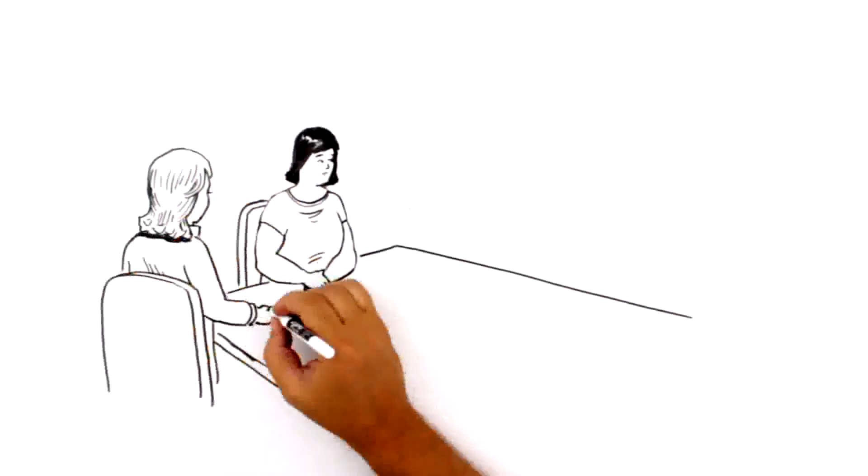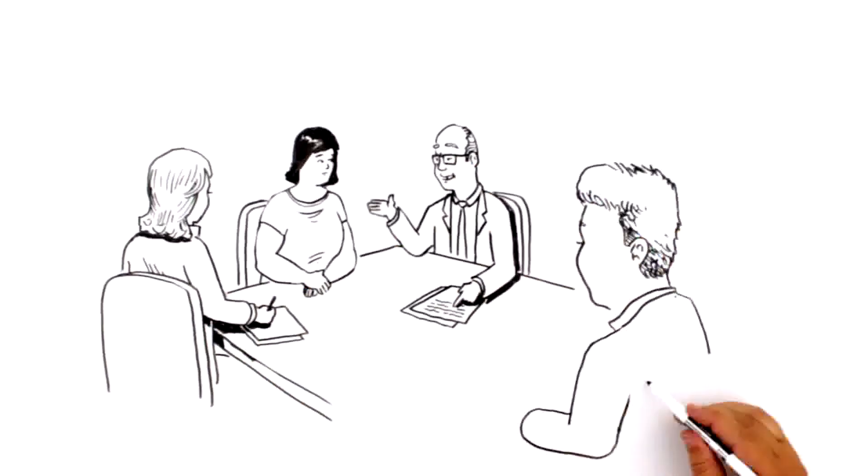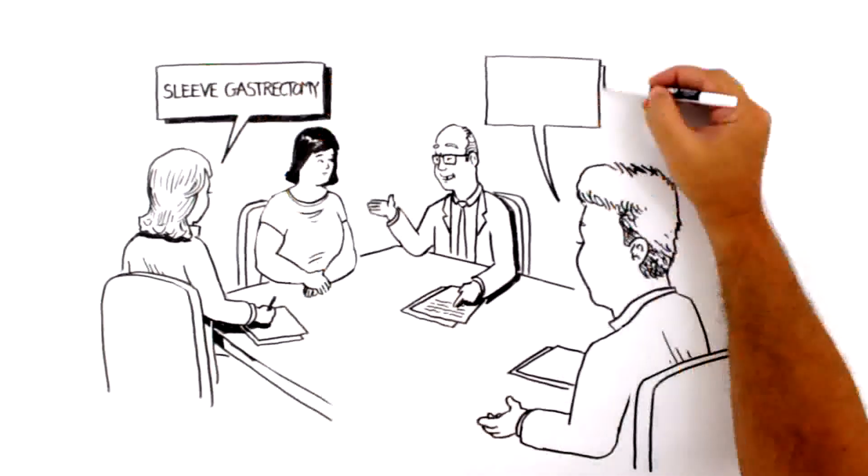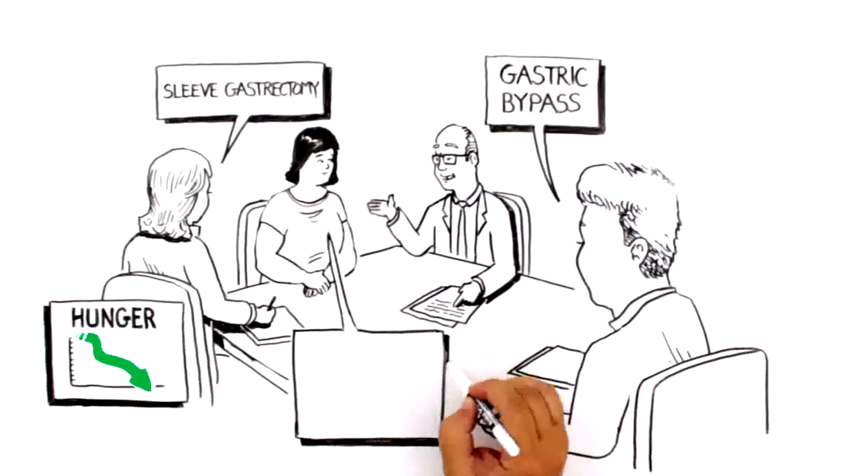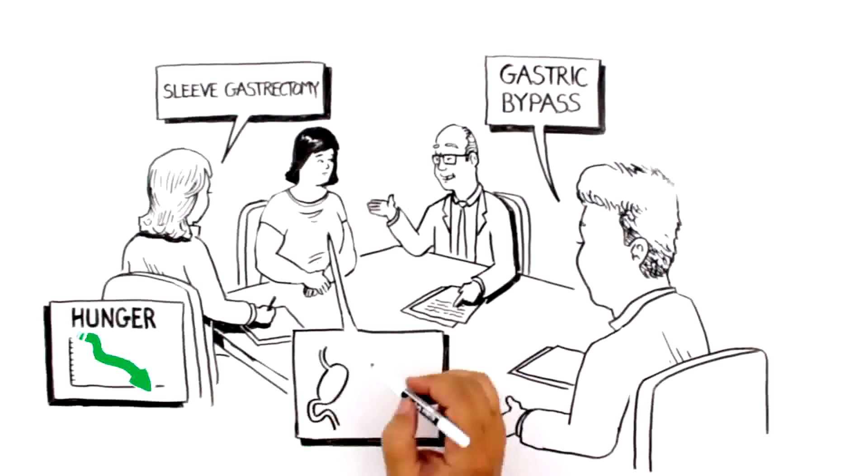Sarah's bariatric surgery team talks to her about two options, sleeve gastrectomy and gastric bypass. Both procedures decrease hunger and improve feelings of fullness when eating by decreasing stomach size, changing hormones released by the gut, and altering the way Sarah's stomach talks to her brain.